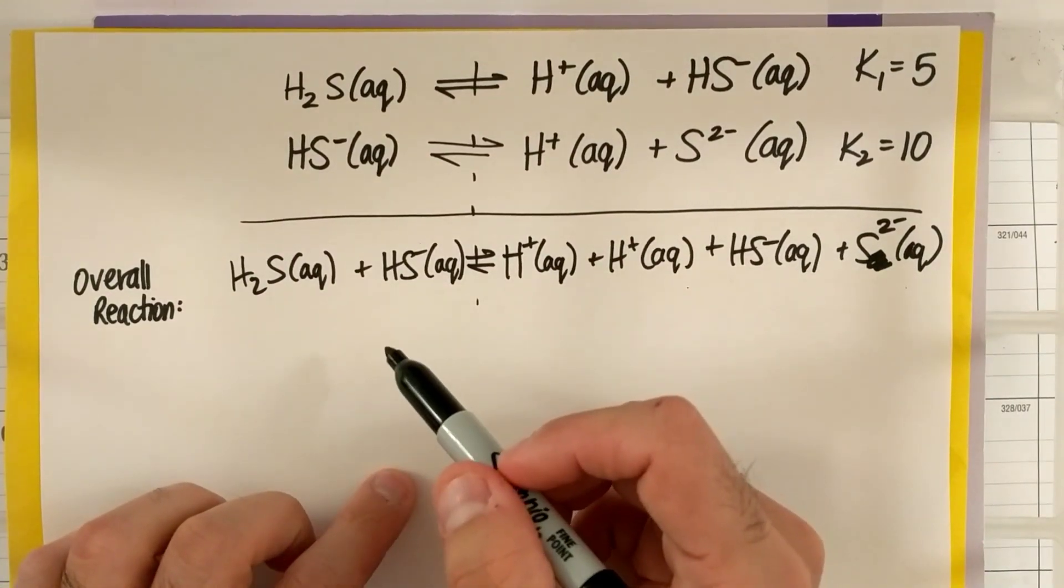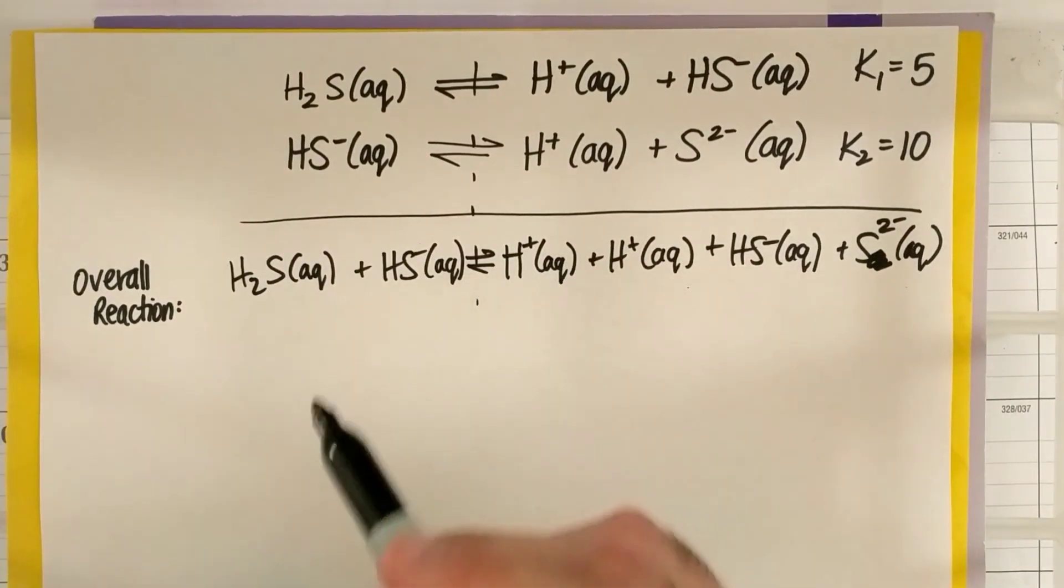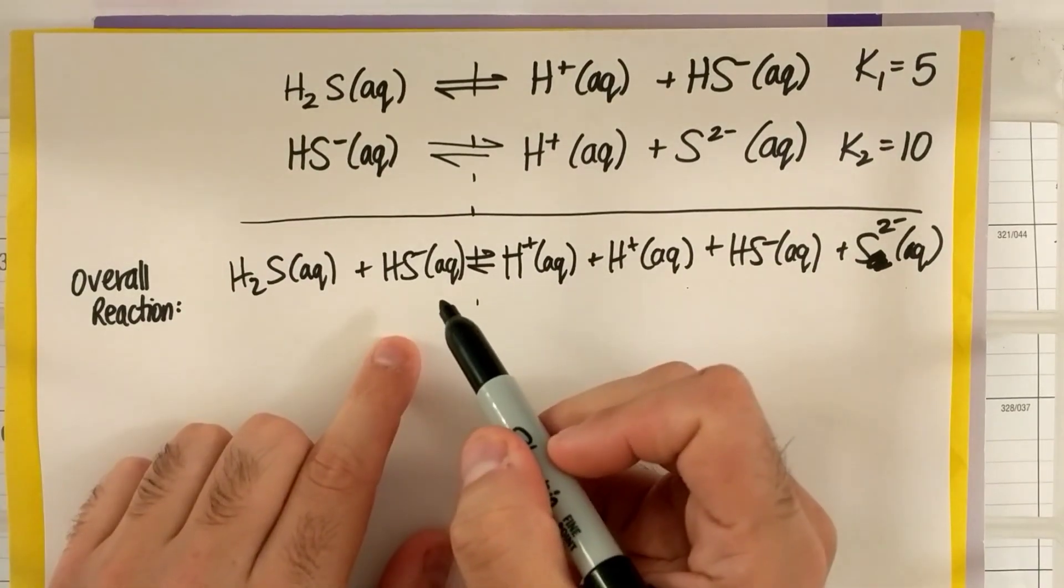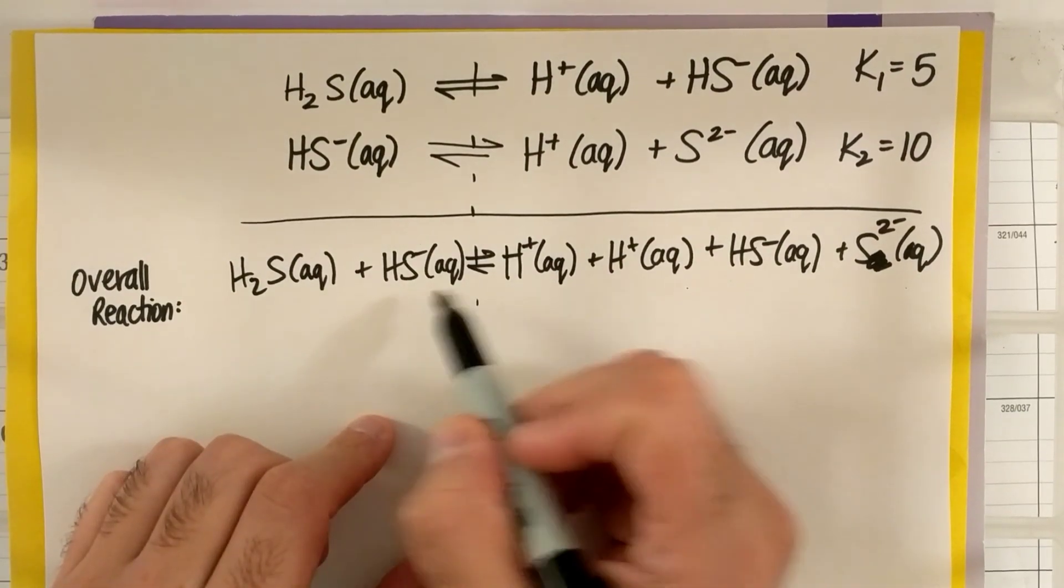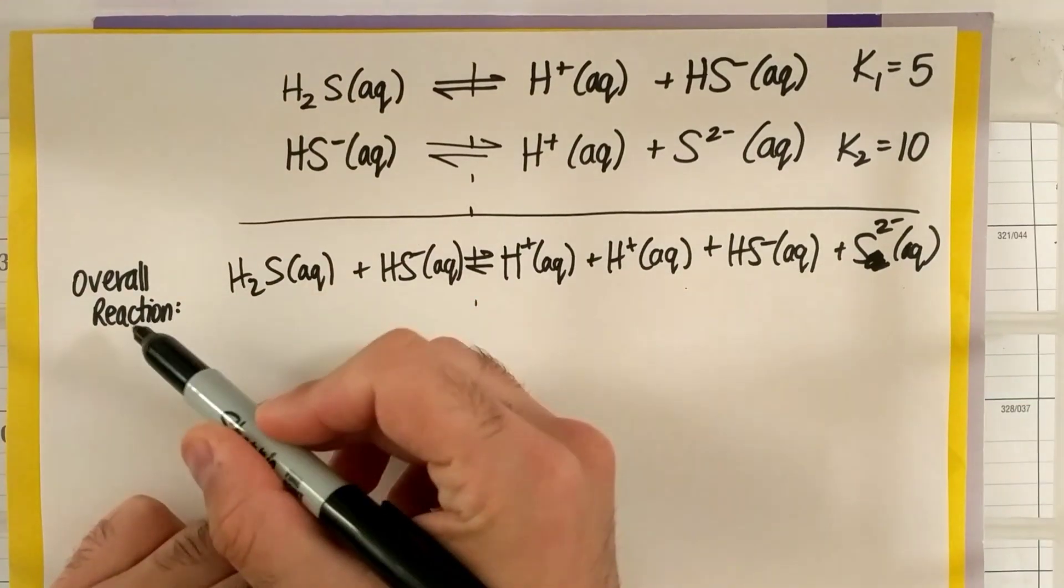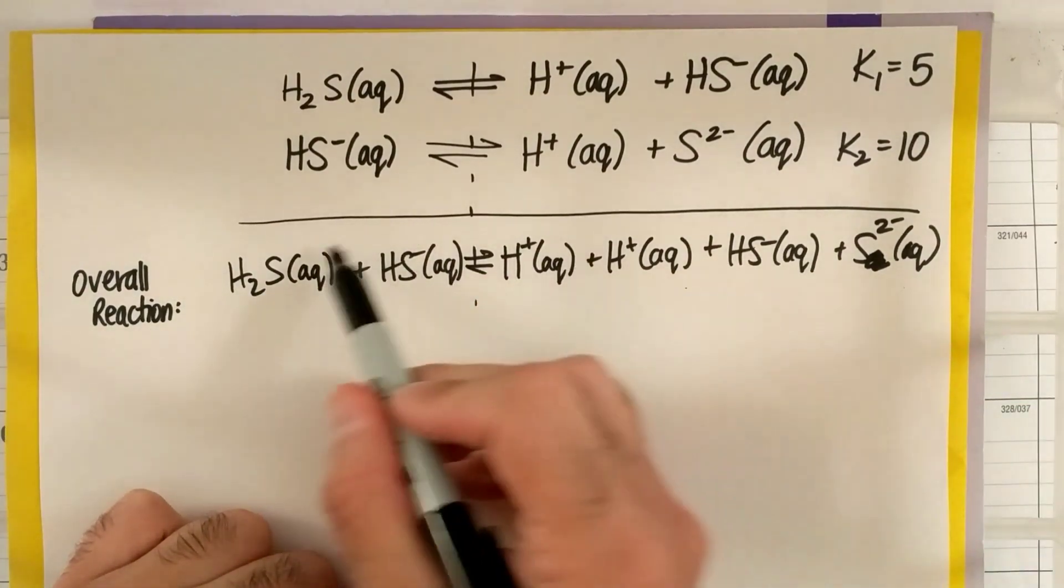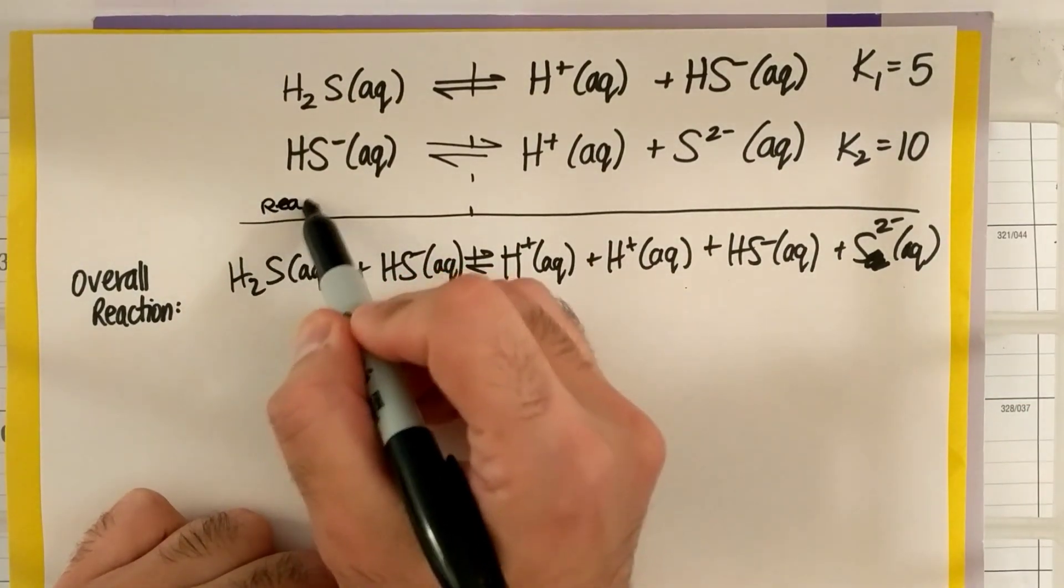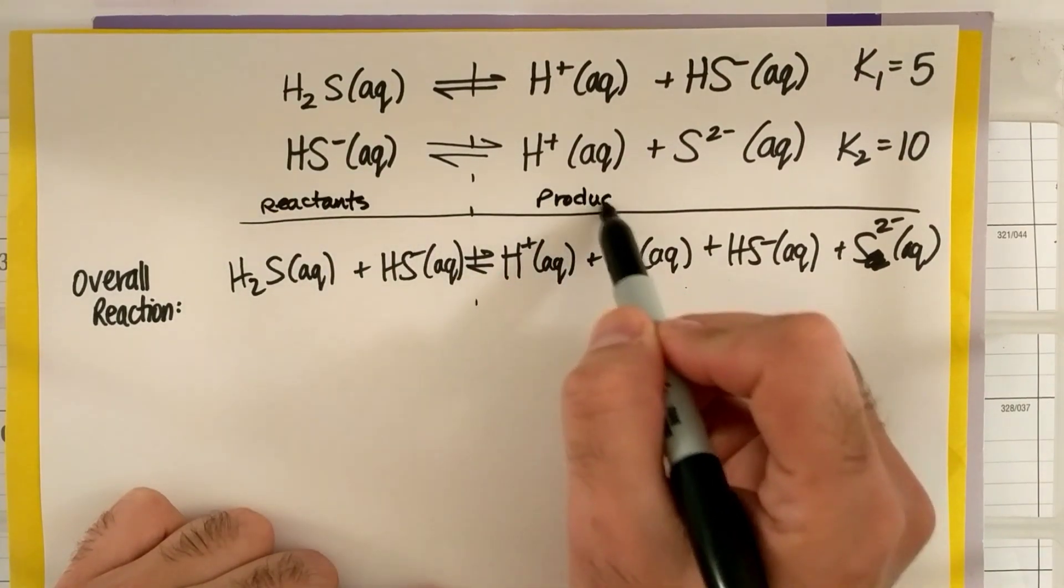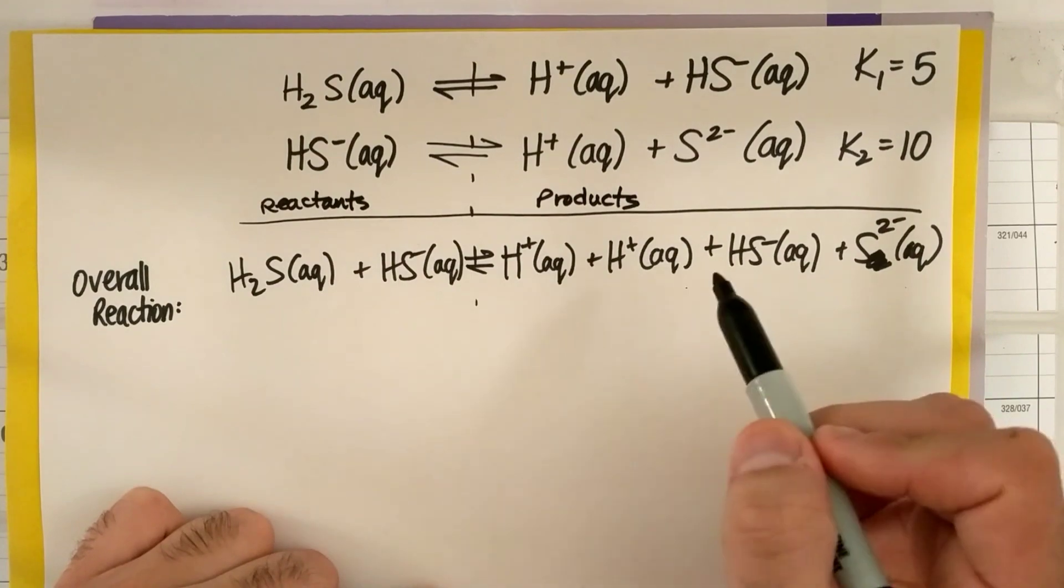All right, and so now, kind of like in algebra, when you add or rearrange or try and get all your common factors on one side, I'm going to combine like terms and cross out that are on both sides. So first, in crossing out something that's on both sides, it looks like my HS minus is shown on both sides. I wrote overall reaction. I just added all my reactants and I added all my products, by the way. And now I'm going to cancel out common terms or combine like terms.